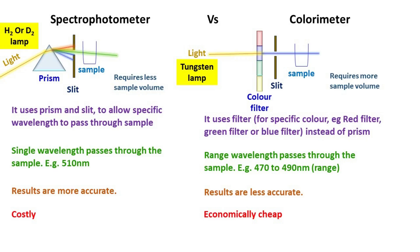The spectrophotometer can be operated in UV as well as visible range. Whereas colorimeter is usually operated in visible range.